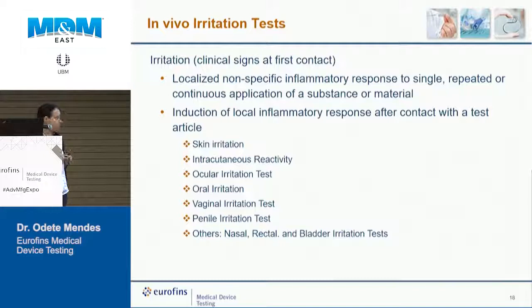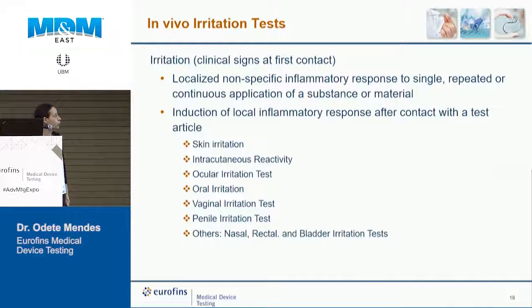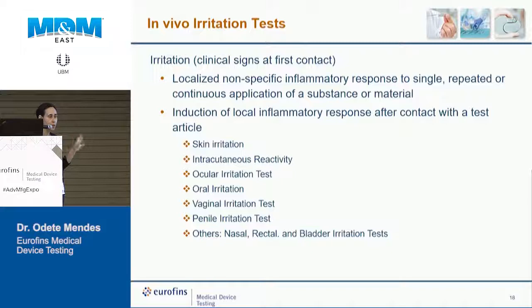In vivo irritation tests evaluate signs at first contact. Irritation is a non-specific inflammatory response and can be evaluated with a single or repeated application depending on the device type. There is a primary skin irritation test, an intercutaneous reactivity test, and a series of mucosa-specific tests. If your device contacts the vaginal mucosa, vaginal irritation is evaluated; if it contacts the oral mucosa, oral irritation testing is done. You only need tests relevant to your device's contact areas.